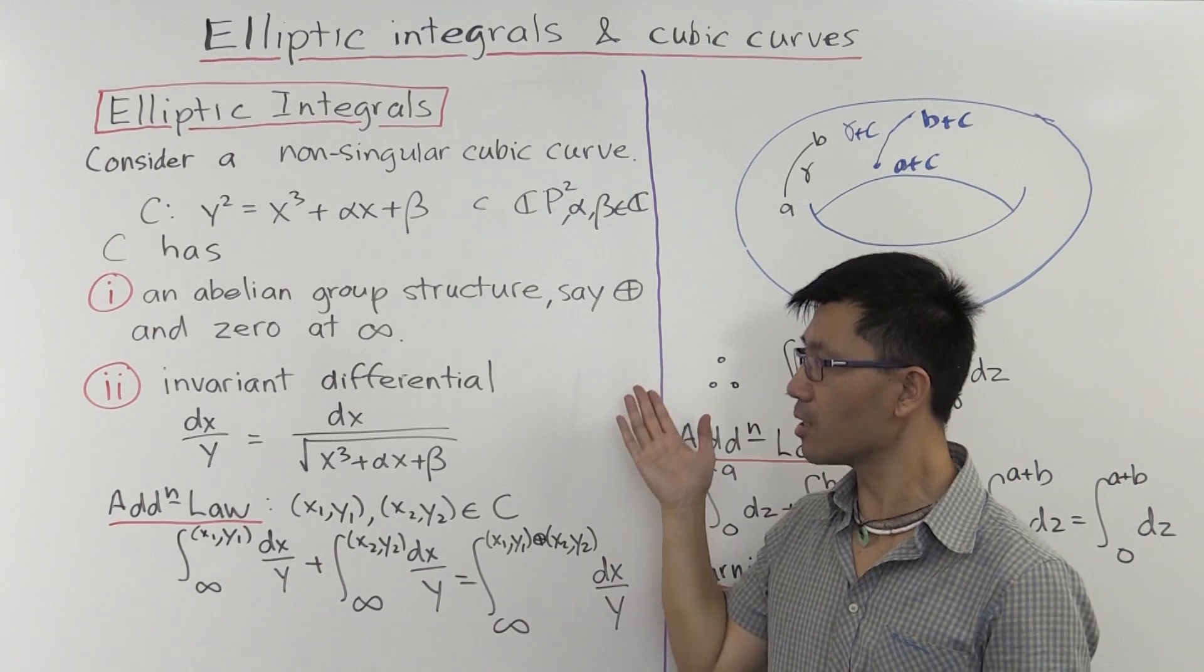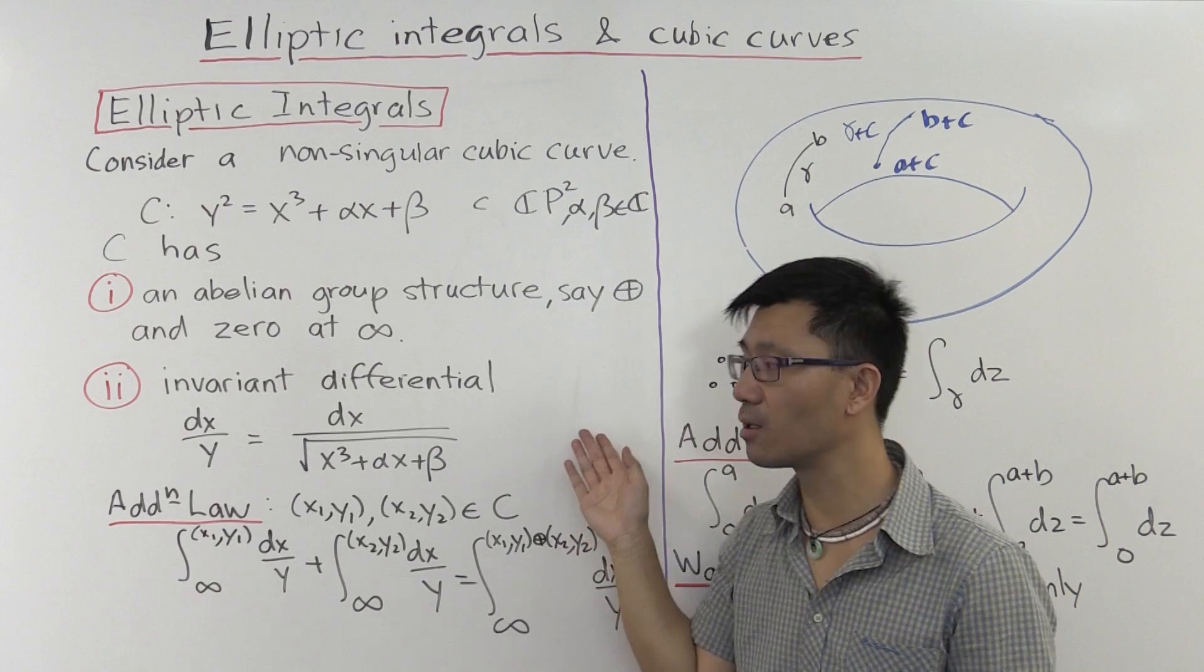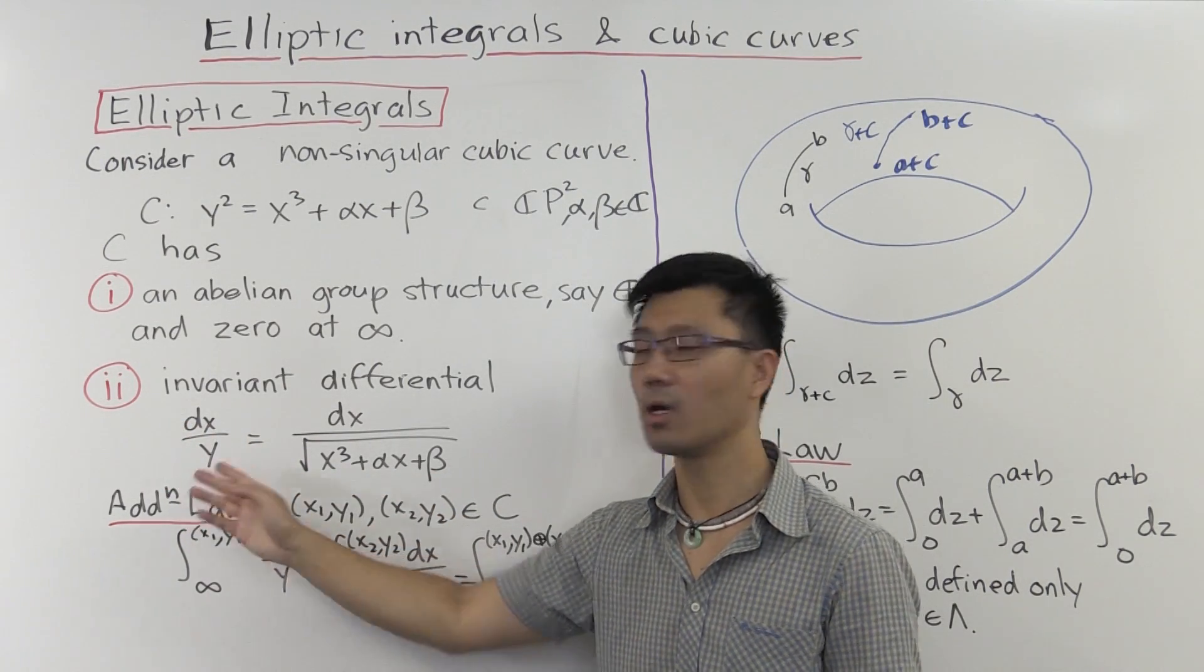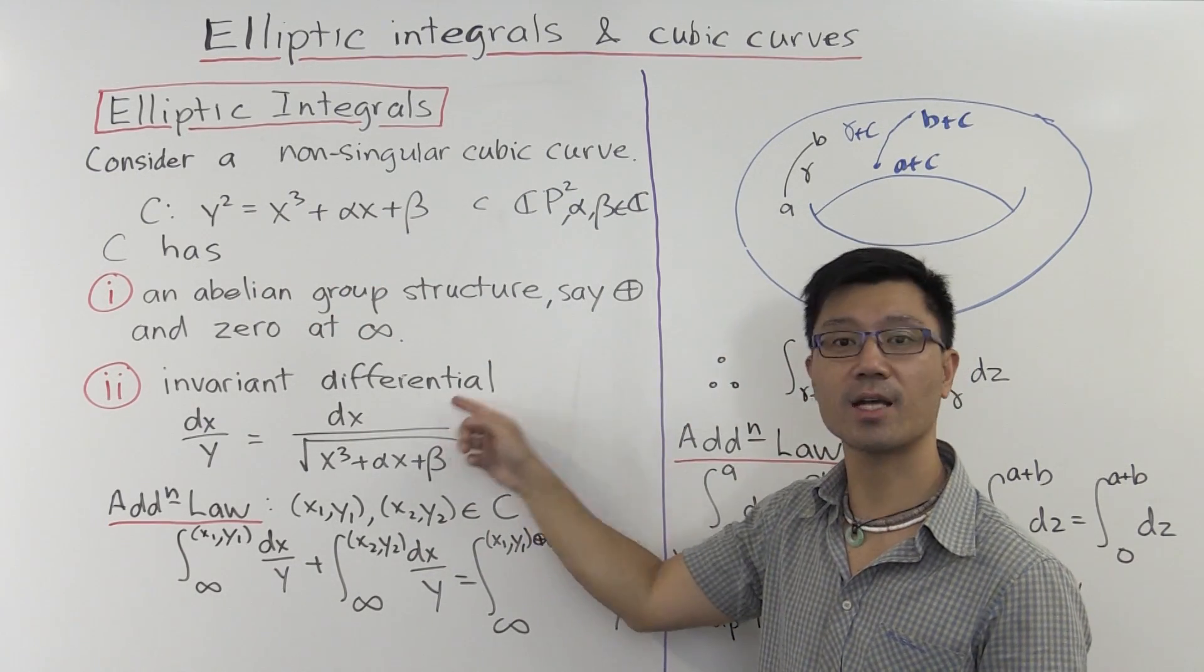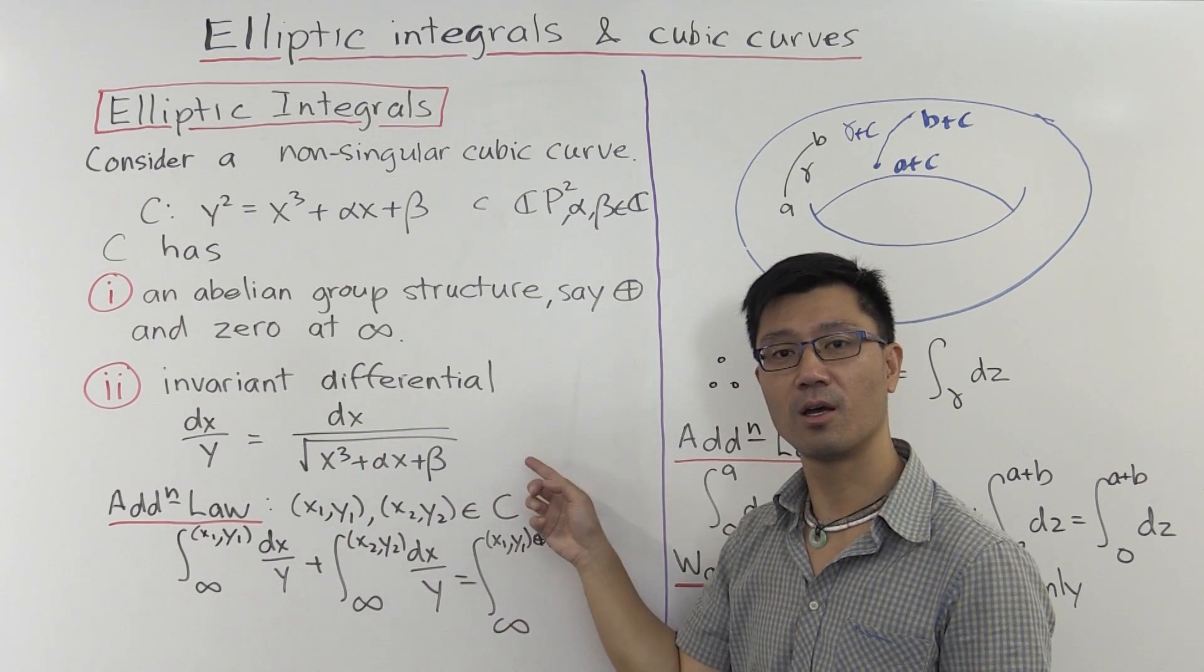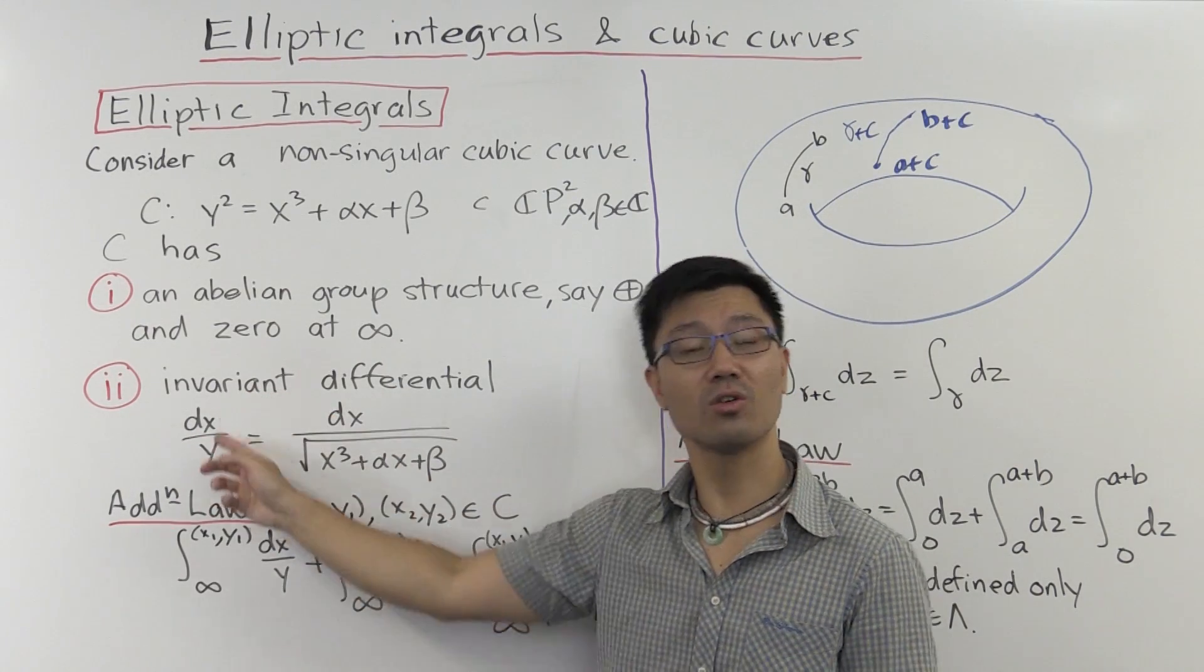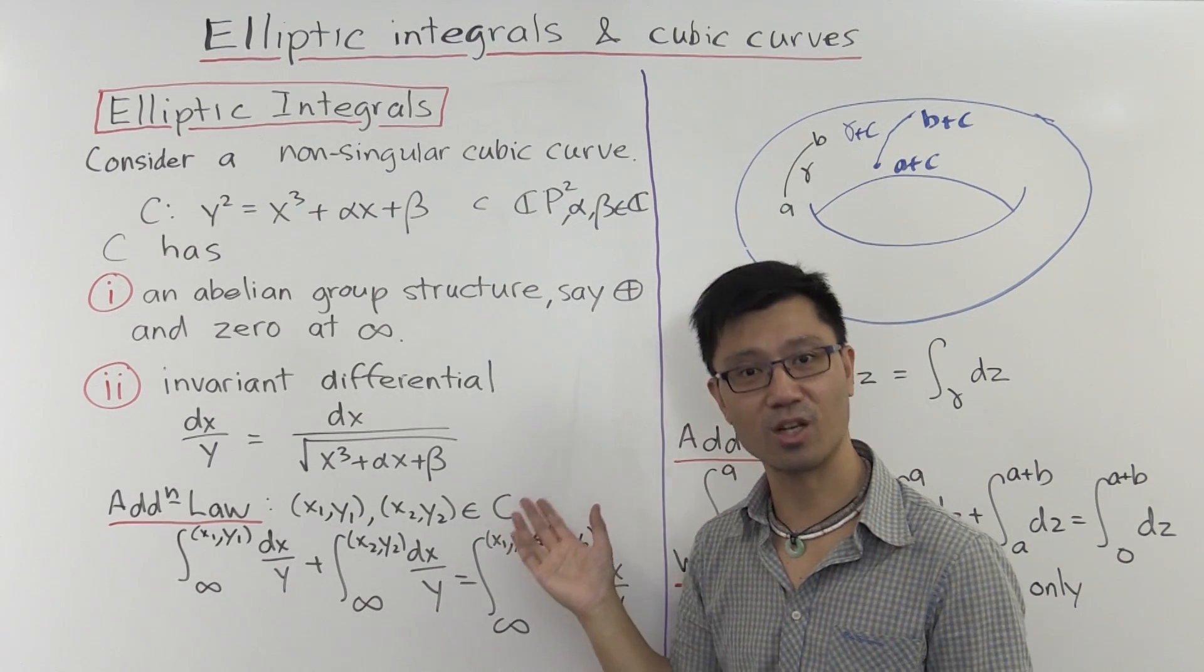And something else that's rather interesting is you can work out what the invariant differential is. And it's just dx/y. Since y² equals this cubic term here, that's just dx over the square root of this cubic here.